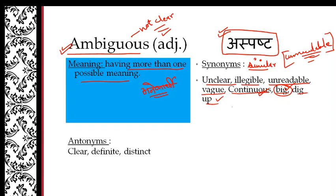Let us know its opposite words. What are the opposite words? It is just ultra, it is not clear. It is definite, it is very distinct, right? It is very clear, definite.